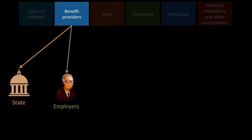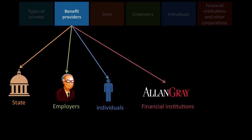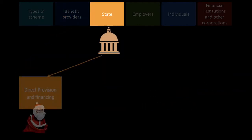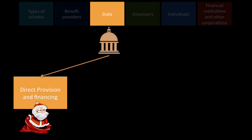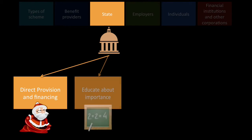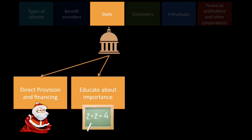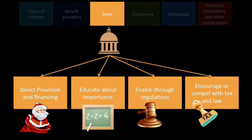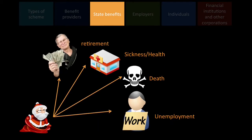Benefit providers: we have the state, employers, individuals, financial institutions, and other corporations. The state can provide benefits directly through provisioning and financing, they can educate the population on the importance of saving for benefits, they can enable through regulations — having that structure in place so that companies can exist and people can save — and they can also encourage or compel people with tax and the law.